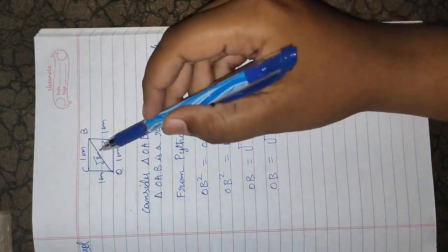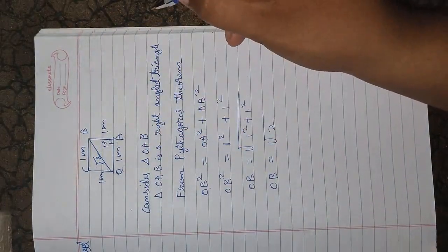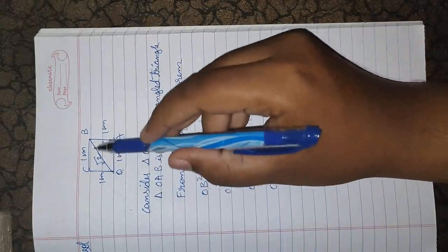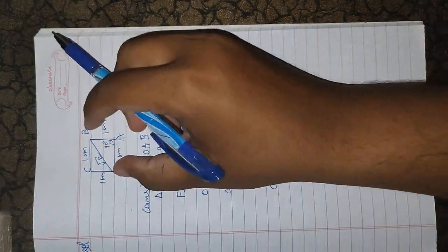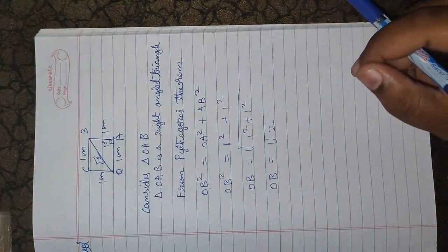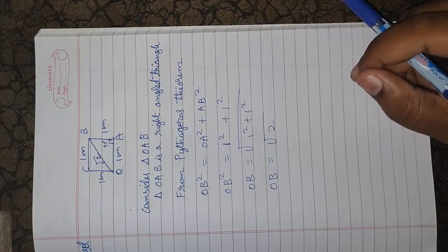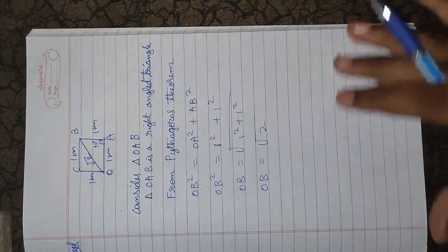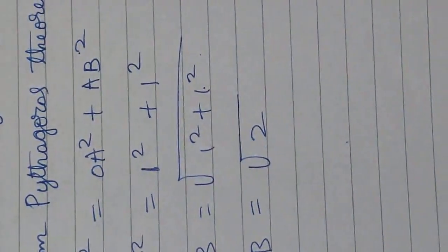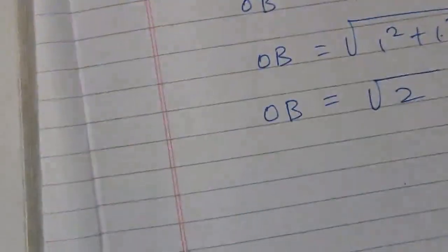To represent √2 on the number line, I should place this unit square on the number line. Then I should take a compass, keep the compass tip at point O, and from point B cut an arc onto the number line — I will get the √2 representation on the number line. Please watch this carefully.